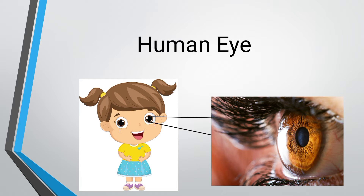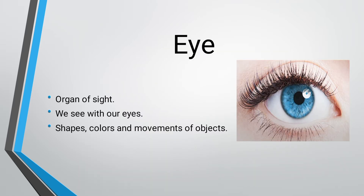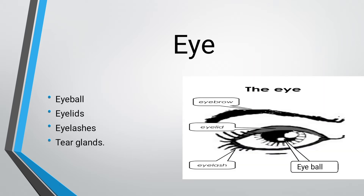The eye is an organ of sight, which is why we use our eyes to see. We use our eyes to see shapes, colors, and movement of objects.